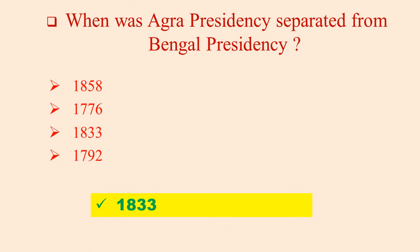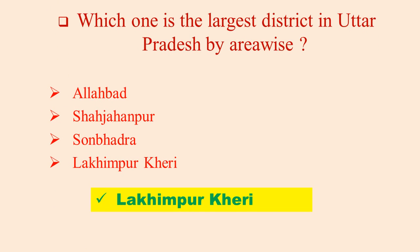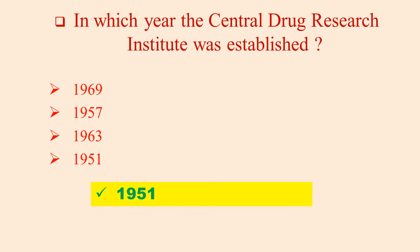Indian Citizenship can be acquired through which of the following? By Descent, by Naturalization. Which is the largest district in Uttar Pradesh by area? Lakhimpur Khiri. Indian Constitution took the concept of Single Citizenship from UK.